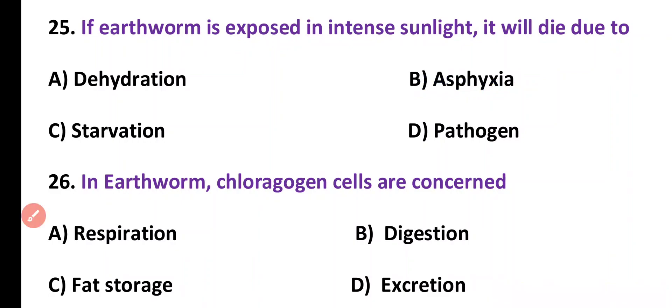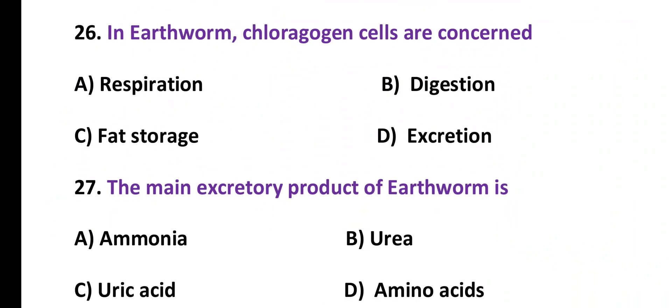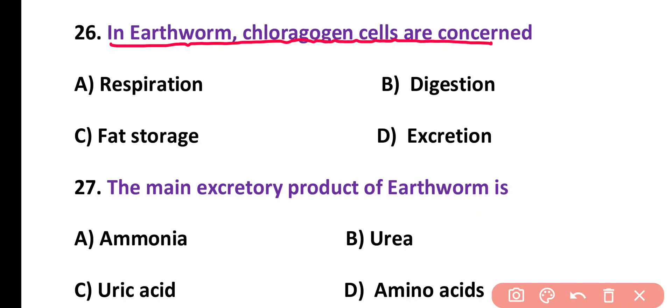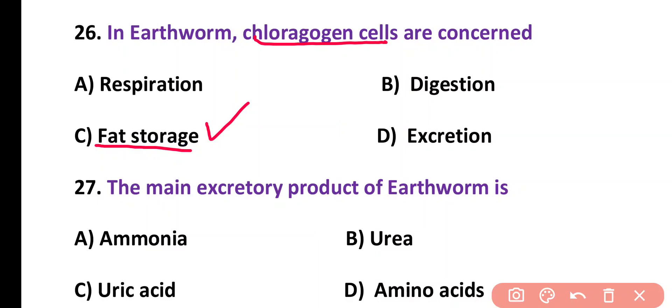Question number 26. In earthworm, chloragogen cells are concerned with: respiration, digestion, fat storage, or excretion. Correct answer is option C. Chloragogen cells are similar in function to the liver of vertebrates; they are used for fat storage, especially glycogen, and also detoxify different toxins.